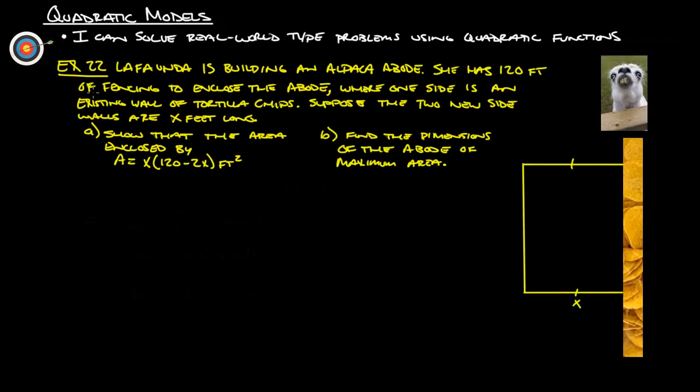Second problem, similar to, but not the same as example 22. La Fonda is building an alpaca abode. She has 120 feet of fencing to enclose the abode, where one side is an existing wall of tortilla chips. Hopefully, the alpacas do not like to eat the tortilla chips. Suppose the two new side walls are X feet long, so this is X. This would also then be up here would be X.